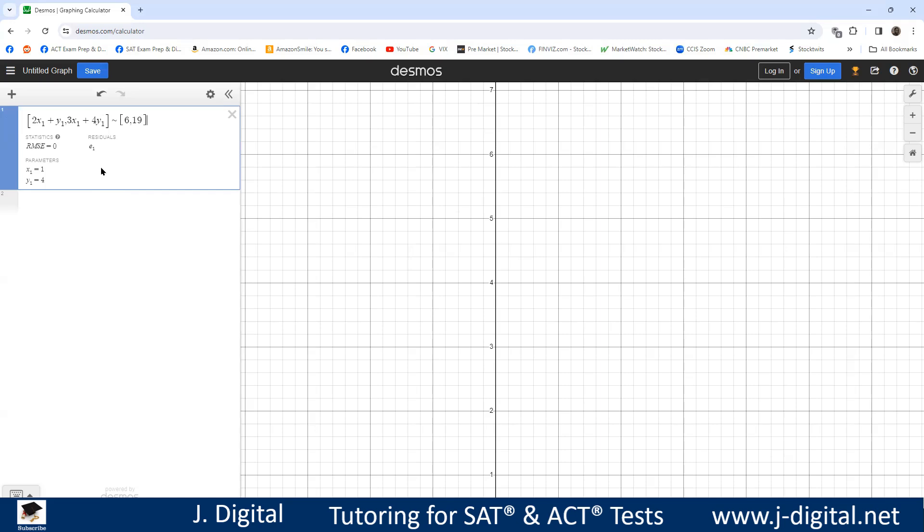So I showed you two methods to solve a system of linear equations. To find out where they meet, either graph them and find out where they meet. You might have to move the graph around, zoom in, zoom out to find it. Or you can use regression like I showed you here and they give you the answers right away.